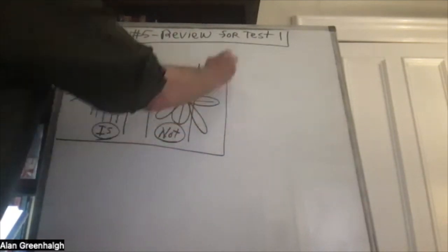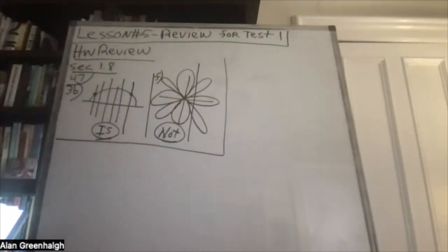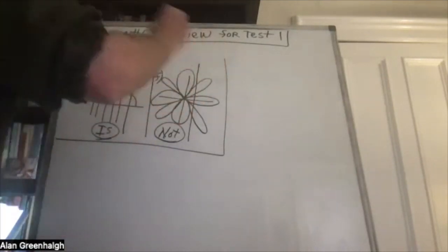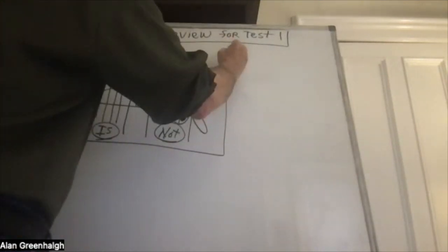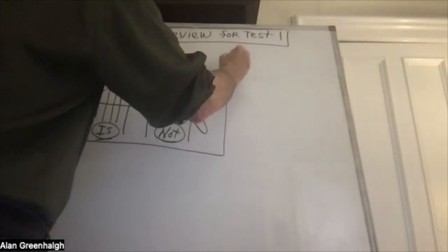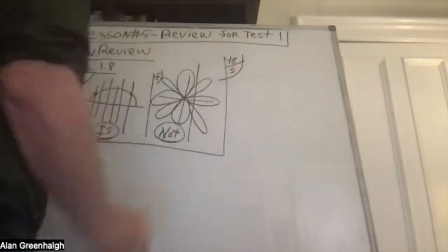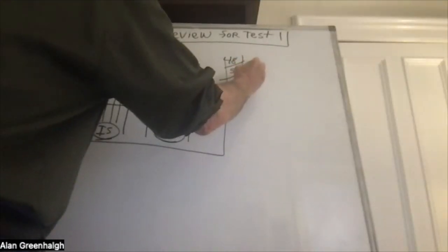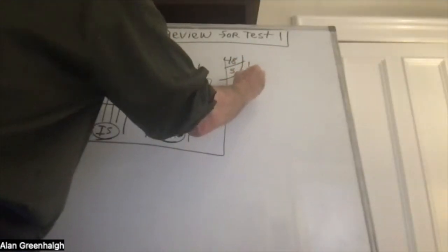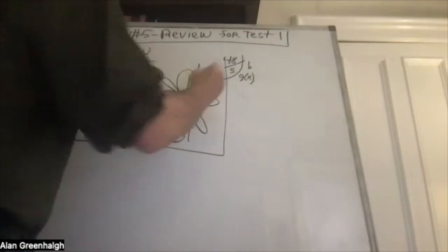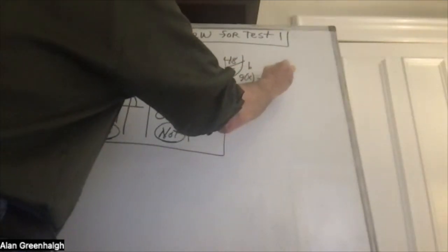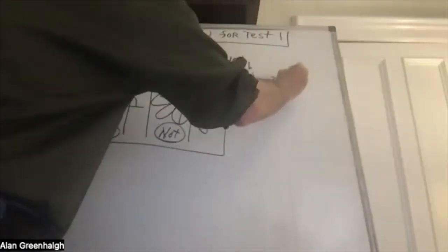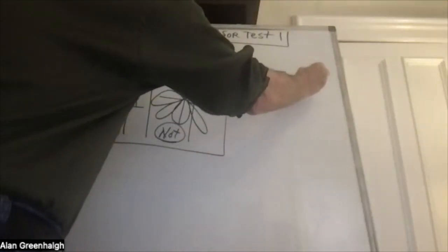That's not on the test though, so let's breeze through that and get to problem five on page 48. This sort of is on the test — problem 5b — and the function is g of x equals negative three x squared plus two x minus four.